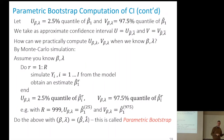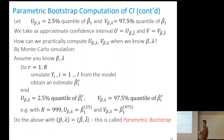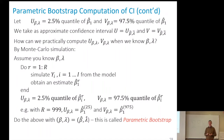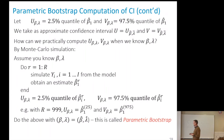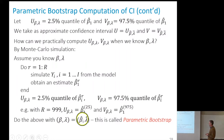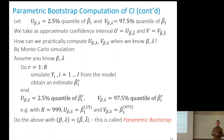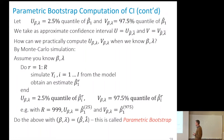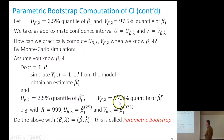Of course, we don't know beta and lambda. The bootstrap idea is to replace beta and lambda by the estimated values. If we do exactly this, we are doing what is called parametric bootstrap. Bootstrap means we use the data as a proxy to the unknown distribution, and parametric bootstrap means we use the estimated parameters of the model to do our Monte Carlo simulation.